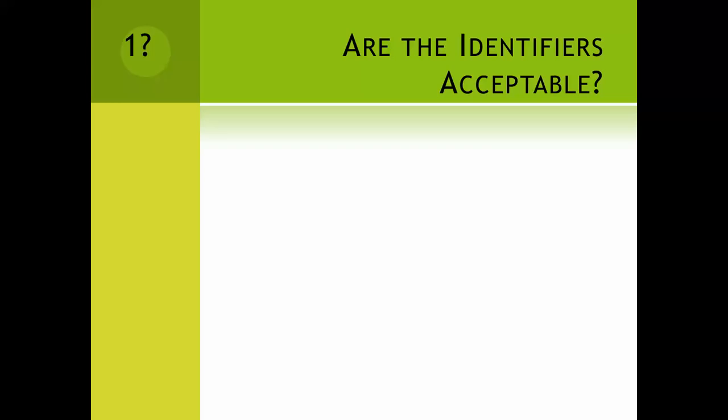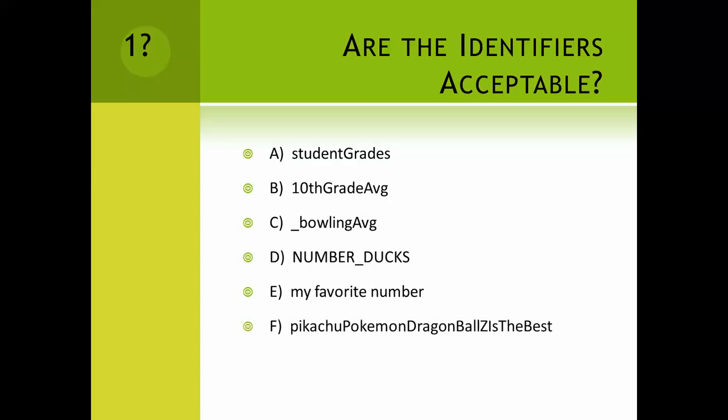So here is your first question. I'm going to load these up on the screen and then you should hit pause. On your piece of paper, answer one A, B, C, etc. So here are the identifiers for you to check out and say if you think they are acceptable. If you don't think they're acceptable, you should say why. So hit pause and do that now. When you're done, hit play again.